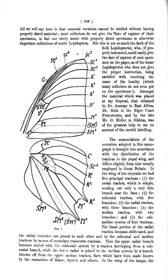Labium: mouthpart forming the lower lip; bears the labial palps. Labrum: anatomical feature, the anterior structure below the clypeus covering some of the mouthparts, sometimes called the upper lip. Lichenophagy: feeding on lichens. Lines of weakness: anatomical feature, the suture lines where the integument will split to allow for molting. Lunula: body area or marking roughly in the shape of a crescent.